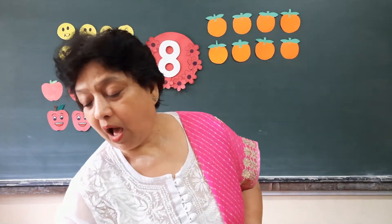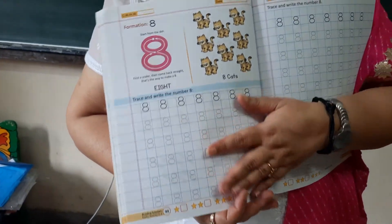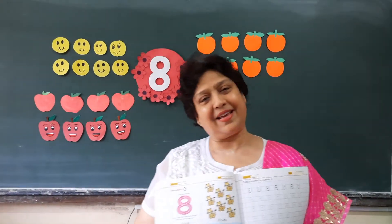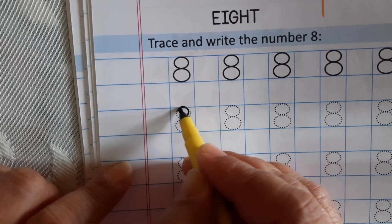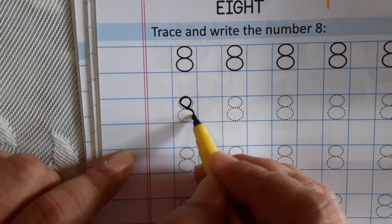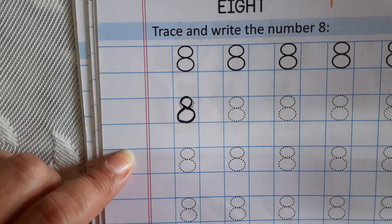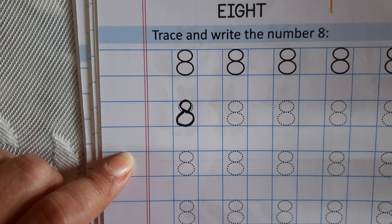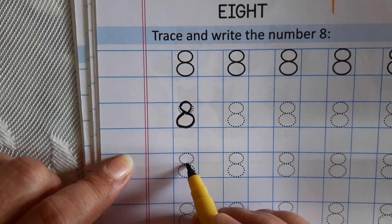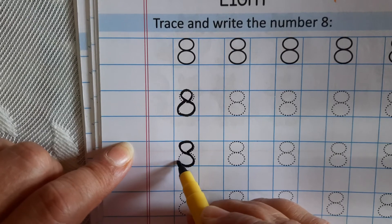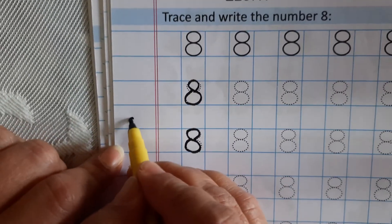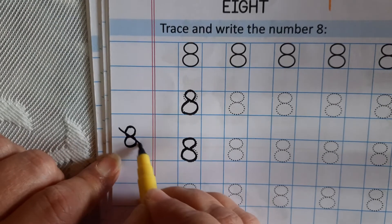So this is your activity book, workbook, Max workbook. Now ma'am is going to tell you how you are going to write eight. There are dots here — from here we will start. We will make an S shape, then bring it back. The eight you have to write should be made like an S. Ma'am is showing again: start here, make a round, then bring it down, and make a round like this. You will not make eight with two zeros — that is wrong.